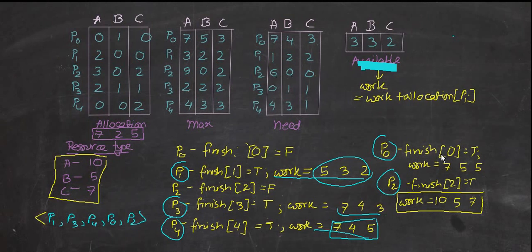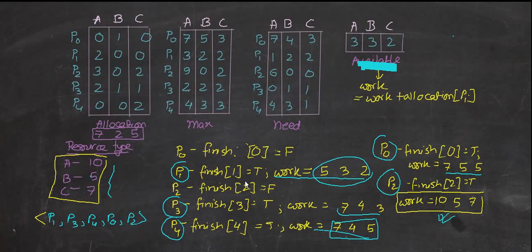Work equals 7,4,5 plus P0's allocation of 0,1,0, giving 7,5,5. Then P2 requires 6,0,0 and we have 7,5,5 — more than enough. Work equals 7,5,5 plus P2's allocation of 3,0,2, giving 10,5,7. You can verify this answer: after all processes complete, we get back to the original total resources of 10,5,7. The safe sequence is: P1, P3, P4, P0, P2.